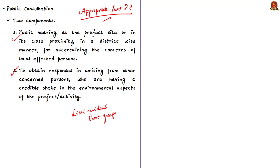Public consultation ordinarily has two components: one is public hearing, mostly at the project site or in close proximity, to be carried out district-wise for ascertaining the concerns of locally affected persons; and the next is to obtain responses in writing from other concerned persons who have a credible stake in the environmental aspects of the project or activity.